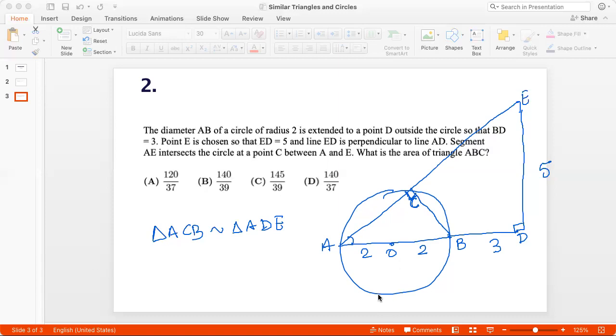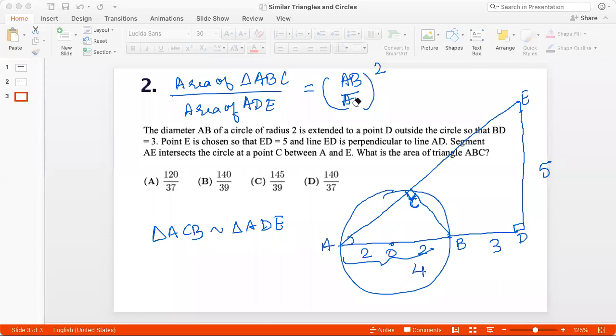Now what can I do with this information? If the area of triangle ABC has to be found, its ratio with the area of triangle ADE will be the ratio of AB by AD the whole squared because the ratio of the areas of similar triangles is the square of the ratio of their corresponding sides. Now interestingly, I already know AB. AB is 4 and I can find AD, right? No, it would be AE here because AB is similar to AE. So I'll just change that. This has to be AE. AE whole squared.